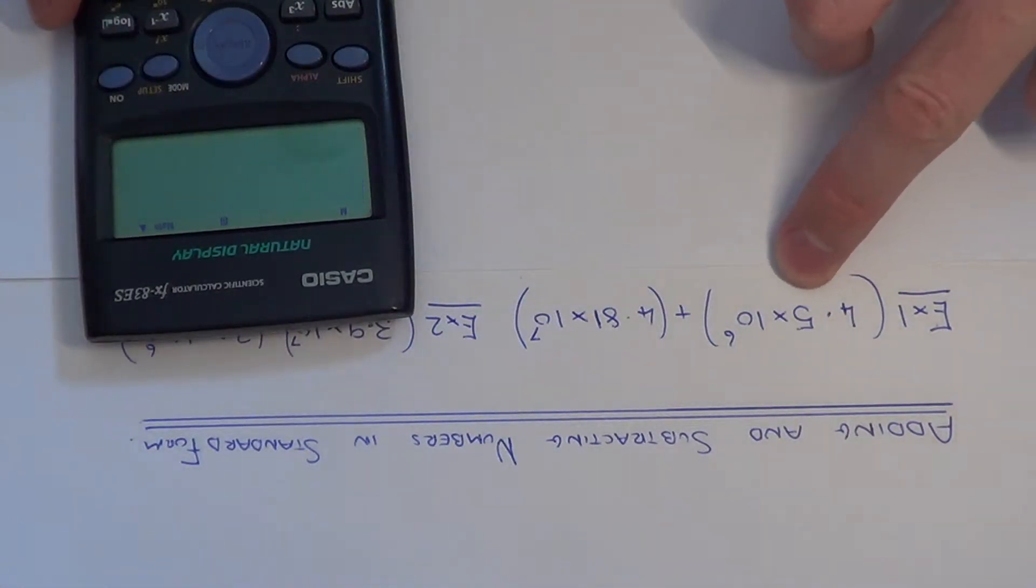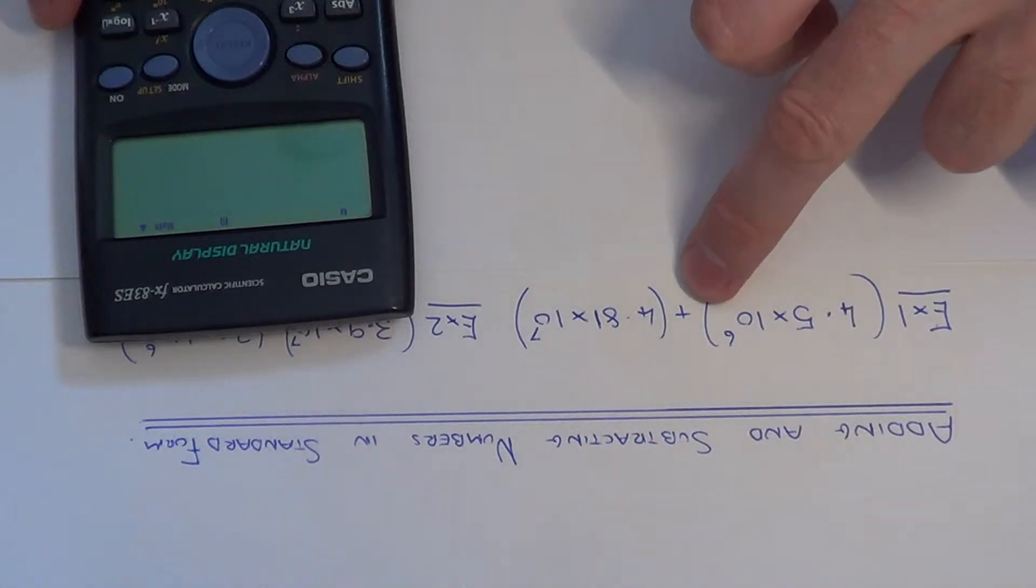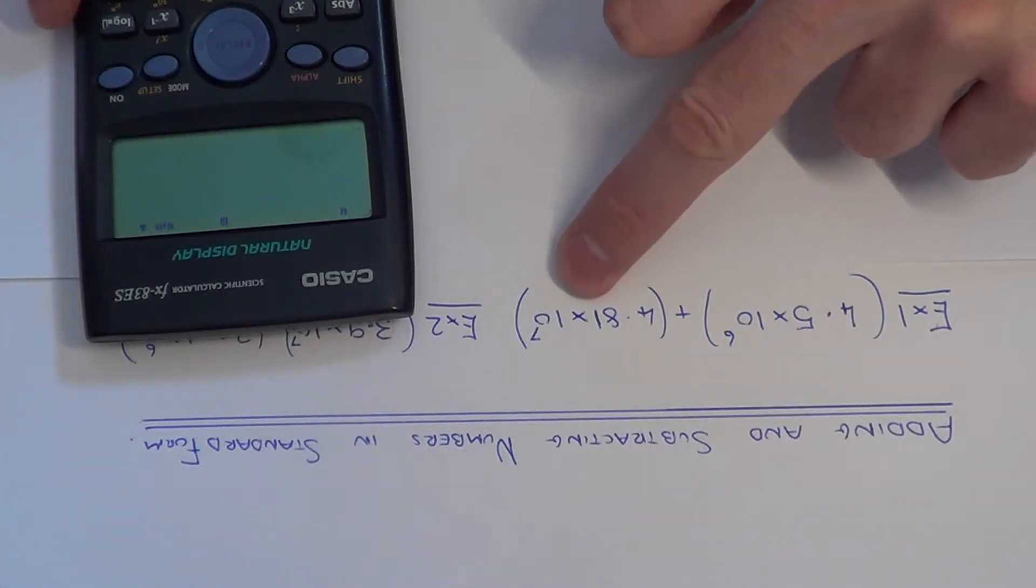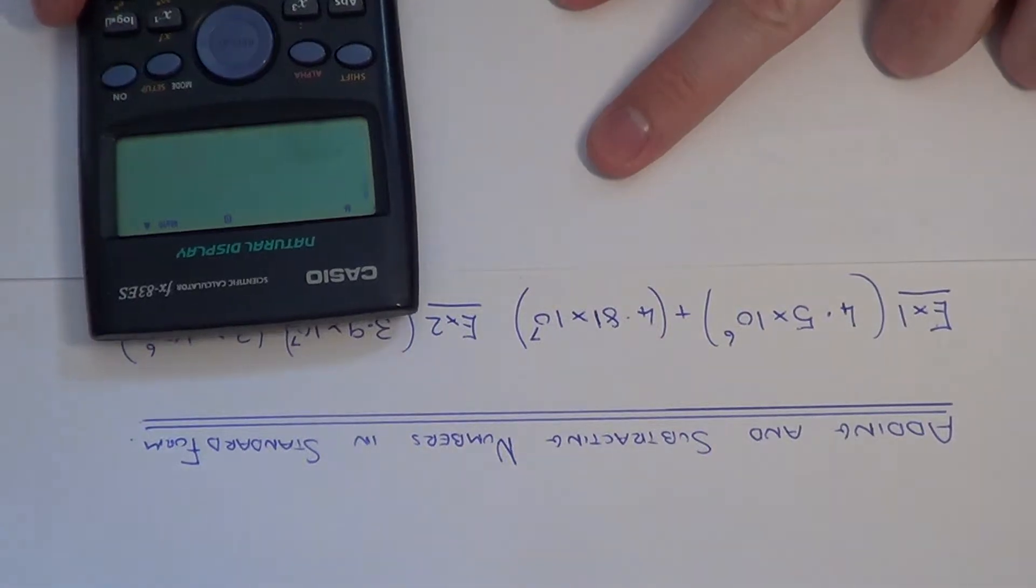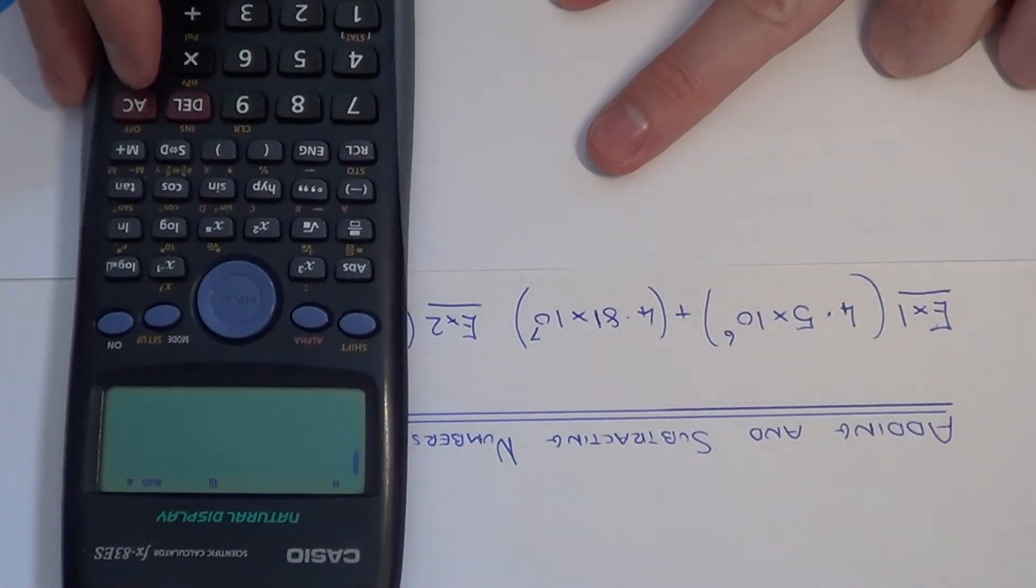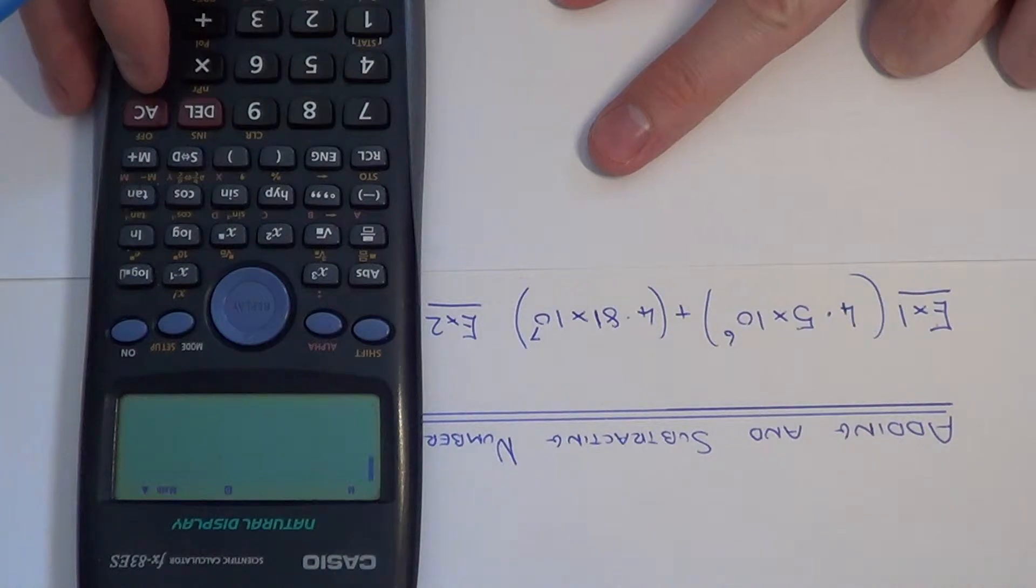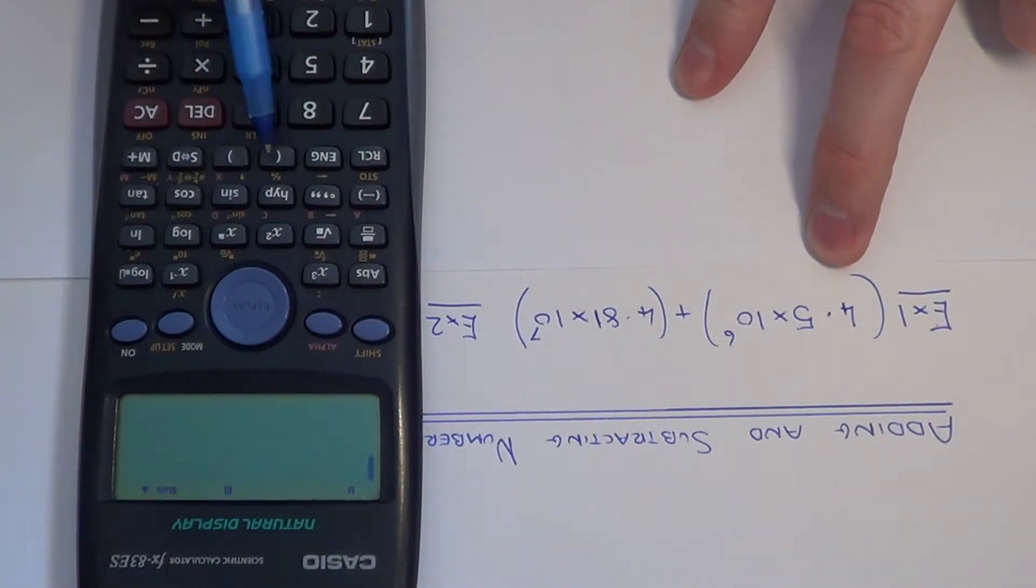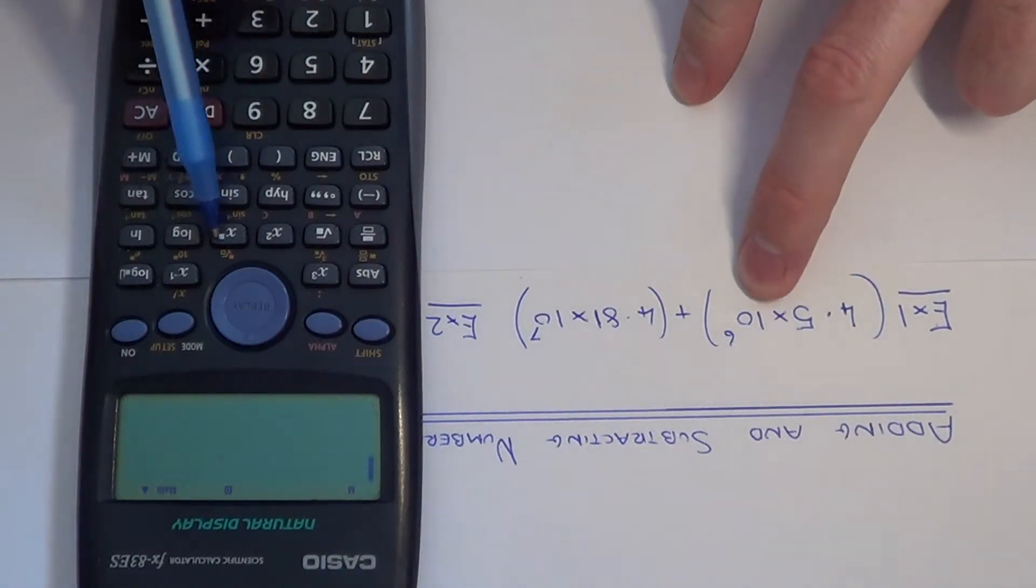The first example we've got 4.5 times 10 to the power of 6 add 4.81 times 10 to the power of 7. So if you get your Scientific Calculator, we just need to know where the bracket keys are, which are here, and the power key, which is here.